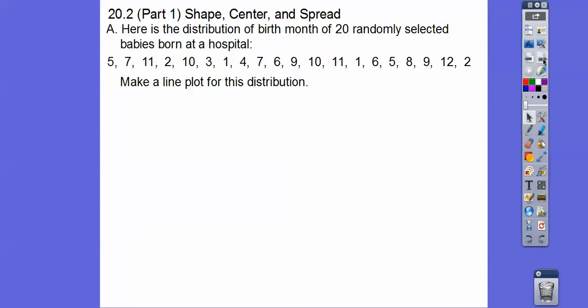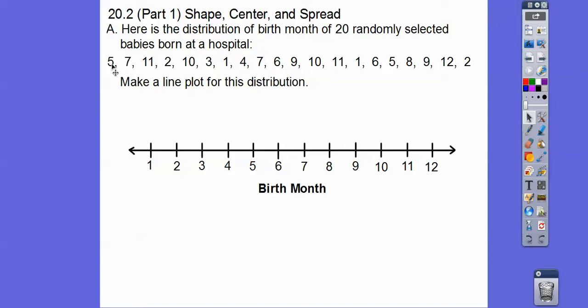And there's 20 babies right there. So let's make a line plot. We've done line plots before. You might have forgotten. So this is what we do. We just put X's above each number. So here's the months 1 through 12 down here. We'll just go ahead and put an X above the 5 for that guy right there. And the next one is 7. So we'll put an X above that one. And then 11, and then 2, and then 10, and 3, and so on. You get the picture, right?